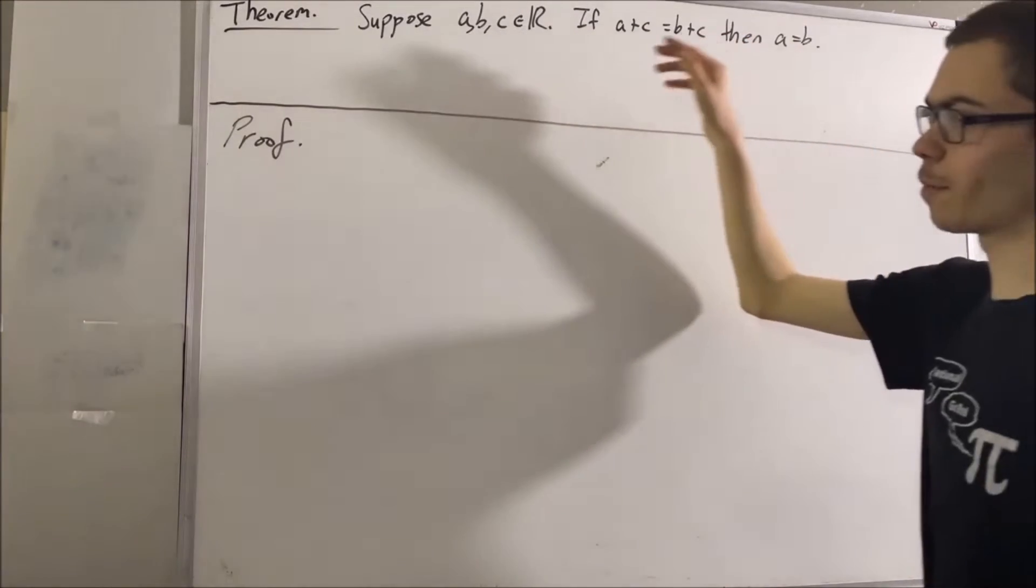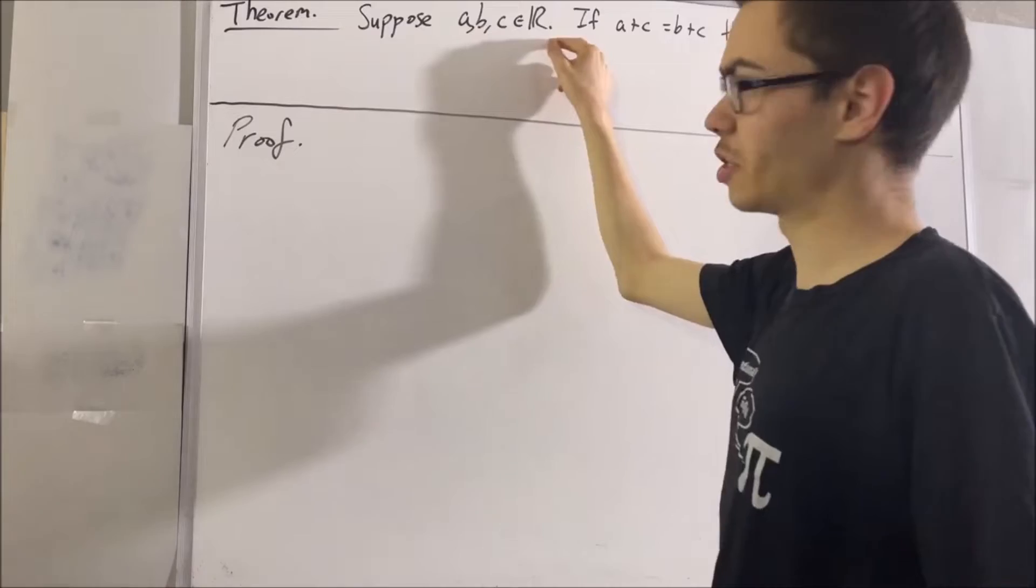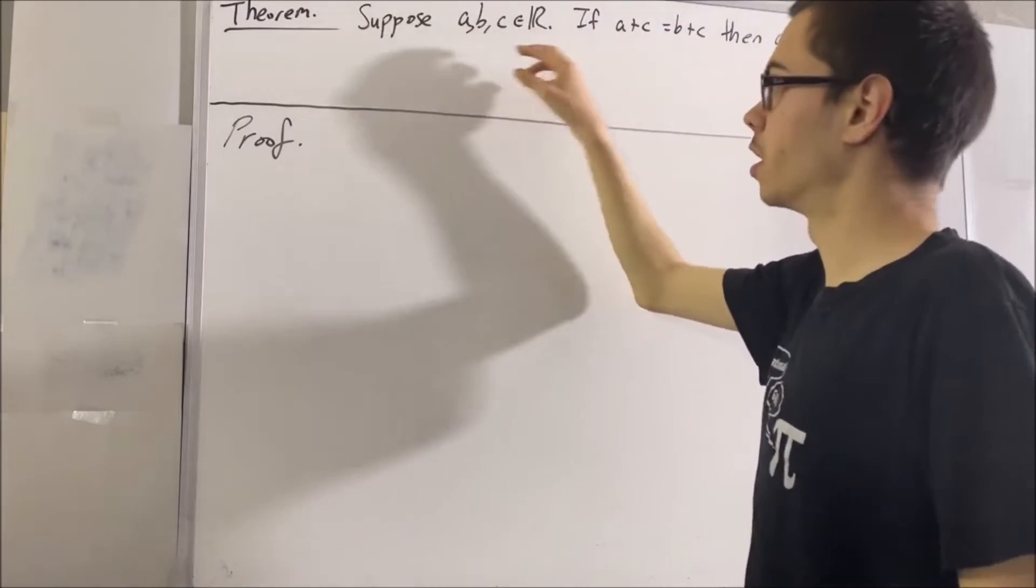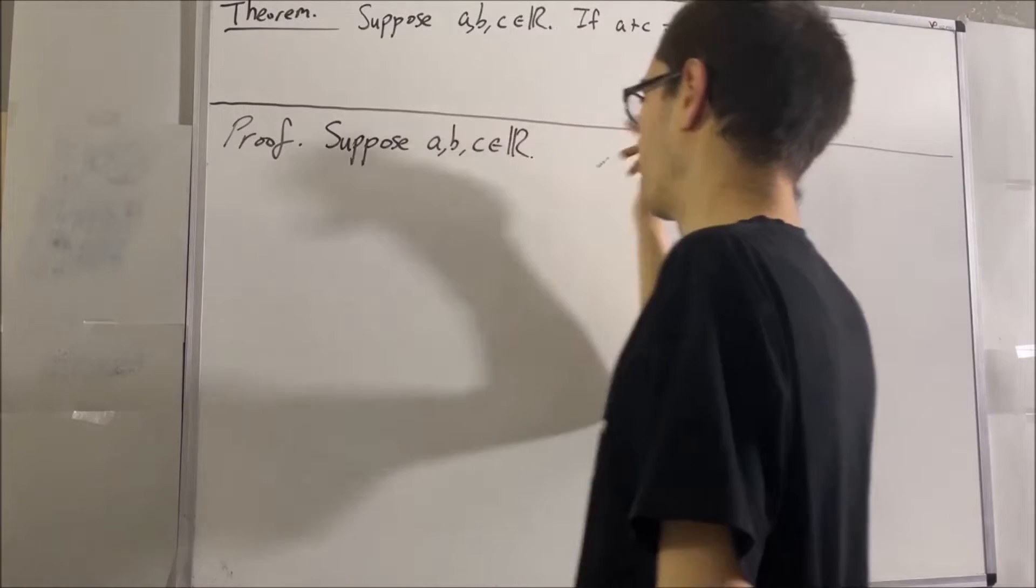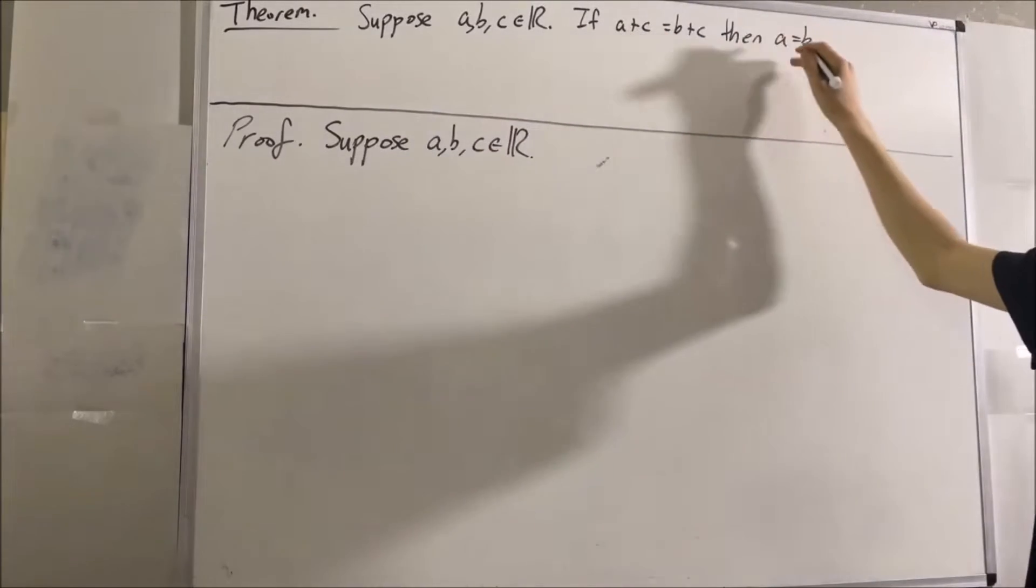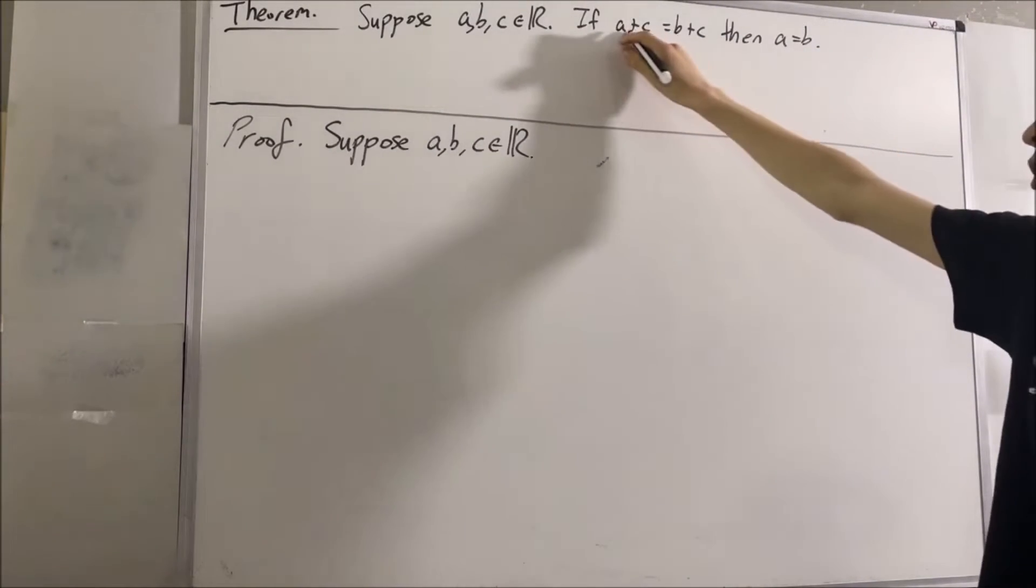So we're trying to prove a statement about every three real numbers. Give me any three real numbers, I'll call them A, B, and C. Our goal is to prove if this is true, then this is true. So let's assume that this is true.